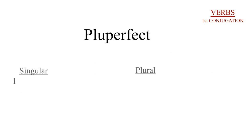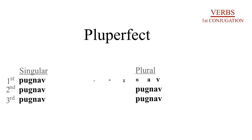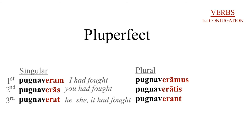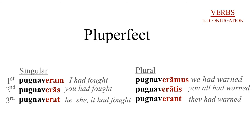Now your pluperfect is going to look a little bit familiar. You're going to keep the stem pugnav-, but you're going to apply the imperfect of the verb to be, esse. So those endings are: -aram, -aras, -arat, -aramus, -aratis, -arant. Notice that the pluperfect, like the perfect, is in the past, but you're applying the word 'had.' So for example, instead of 'I fought,' which would be perfect, you're using 'I had fought,' which makes it even further back in the past.